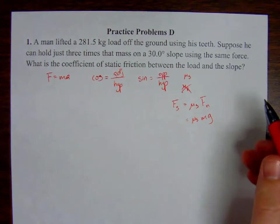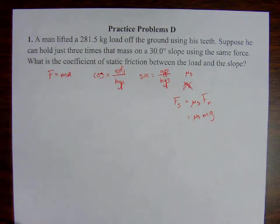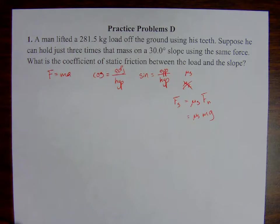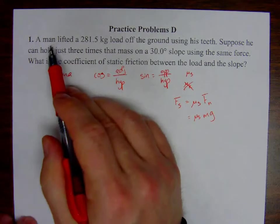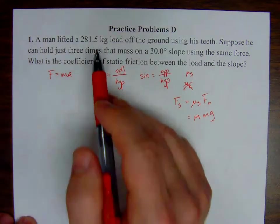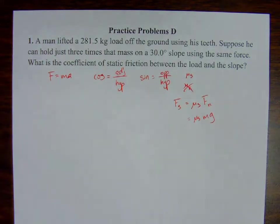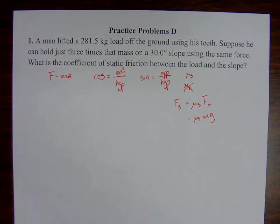Now, reading the problem here is a little bit tricky. Kind of have to sift through some of what they're getting at. So a man lifted a 281.5 kilogram load off the ground using his teeth. There isn't anything important about his teeth, or even about the fact that he lifted it off the ground. Because the next sentence reads, suppose he can hold just three times that mass on a 30.0 degree slope using the same force. Okay, so what that means is the man was able to pick up that load, he accelerated it, it was moving, and so that means that he was using a force sufficient to pick the thing up. Well, this kind of arbitrary fact supplied to us by the question is that he can actually hold three times that mass on this specific slope.